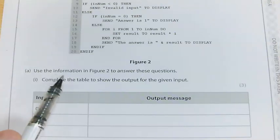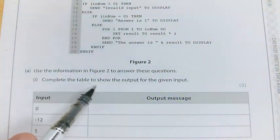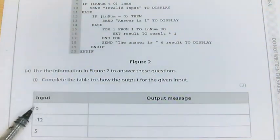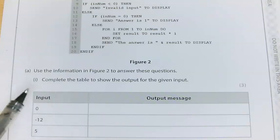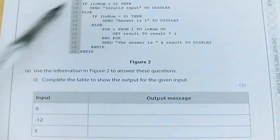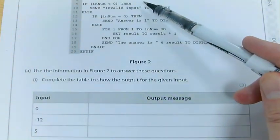So for three marks, use the information in figure 2 to answer these questions. Complete the table to show the output for the given input. So here's my inputs, and there's my output. I need to do that. So we're starting with an input of 0. So receive inNum from integer keyboard, that's going to be 0.